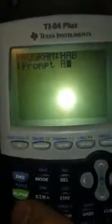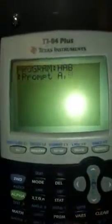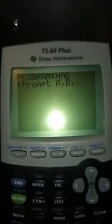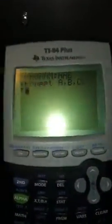First thing we're going to do is we want to prompt it for A, B, and C. So we're going to hit program, prompt, and we're going to prompt alpha A, comma, which is right there, alpha B, comma, and alpha C. We're going to hit enter.